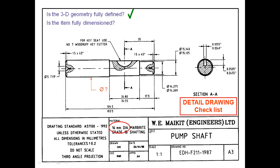So we have 16mm diameter Marbrite grade shafting. That's a particular type of steel shafting. And so that diameter is given to us in the material.